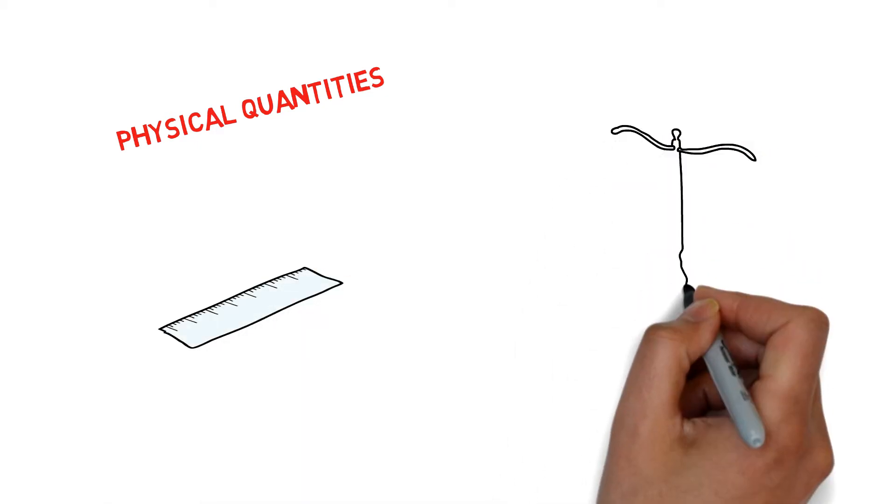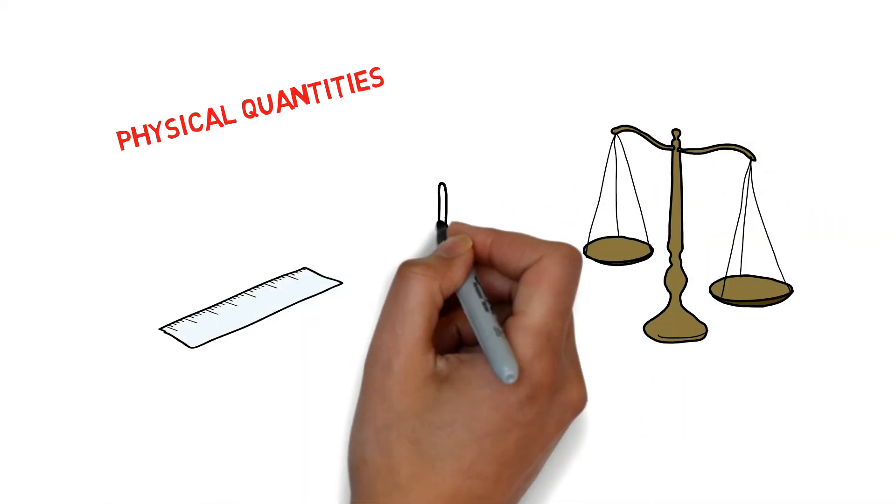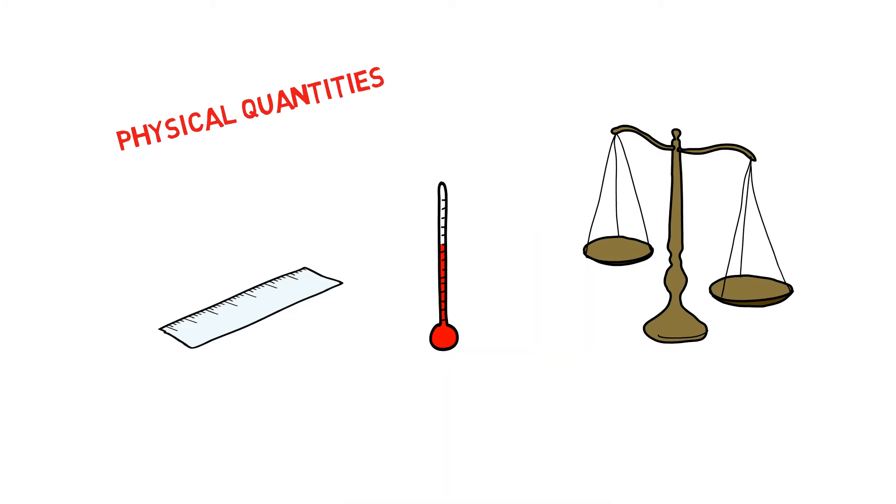Length, mass, temperature are some of these quantities which do not require any explanations as you have very clear understanding about these.